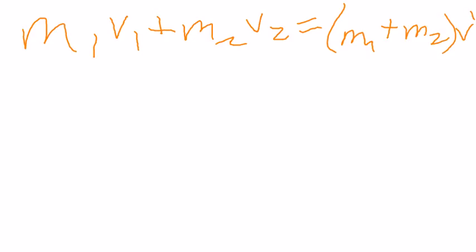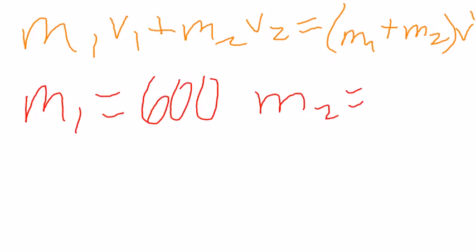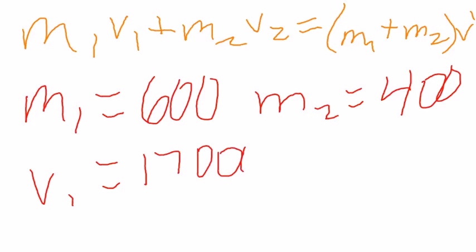The givens are M1 equals 600, M2 equals 400, V1 equals 17,000, and V2 equals 17,010.